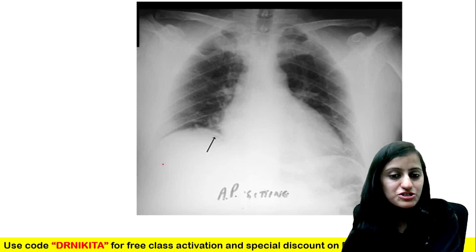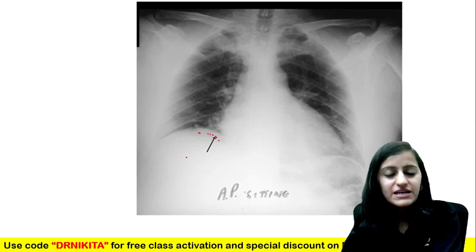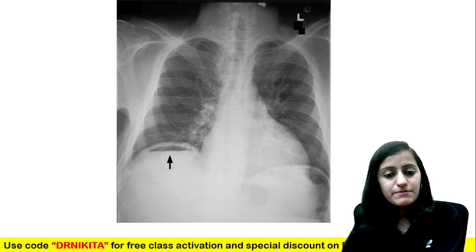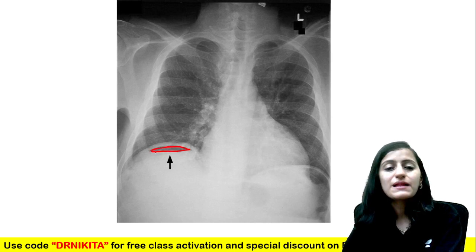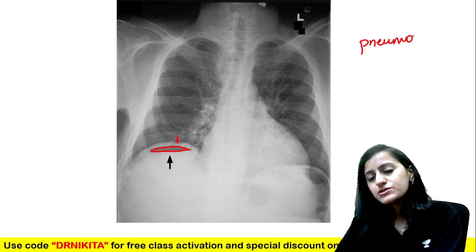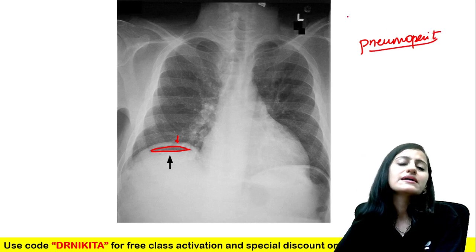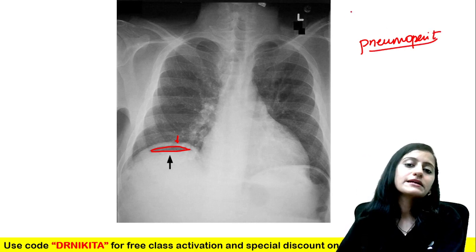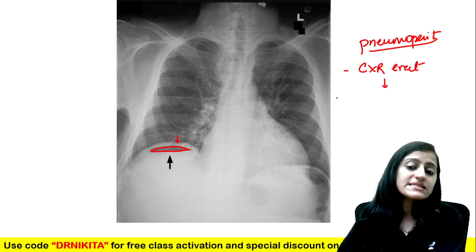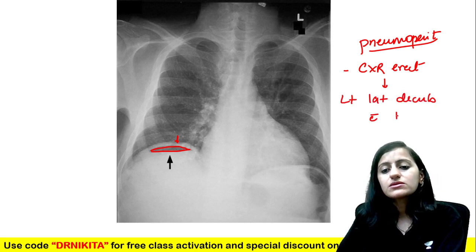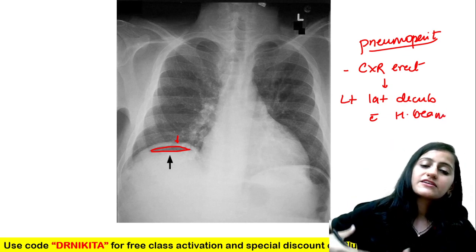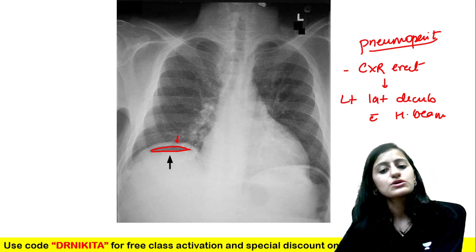In the same patient with pneumoperitoneum, we can see free air under the diaphragm — a very subtle but important finding to pick up. Sometimes pneumoperitoneum can be very obvious, with clearly visible free black air under the diaphragm. The best X-ray for detecting pneumoperitoneum is the chest X-ray erect. If the patient cannot stand erect, we do left lateral decubitus with a horizontal beam, so the air goes to the right side where the liver provides good contrast.